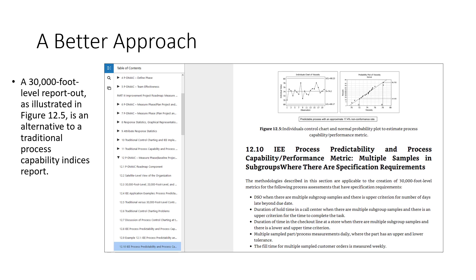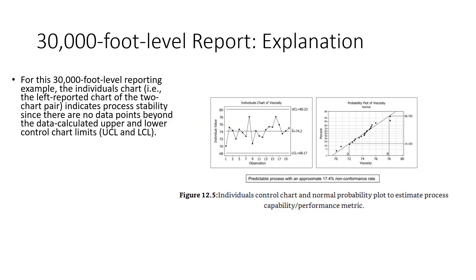If we were to examine Figure 12.5 from Integrated Enterprise Excellence Volume 3, we would see an example of a 30,000-foot-level report out. This form of reporting has many advantages. For this 30,000-foot-level report, the individuals chart — that is, the left chart in the two-part chart pair — indicates the process is stable, with no data points beyond the upper and lower control limits.